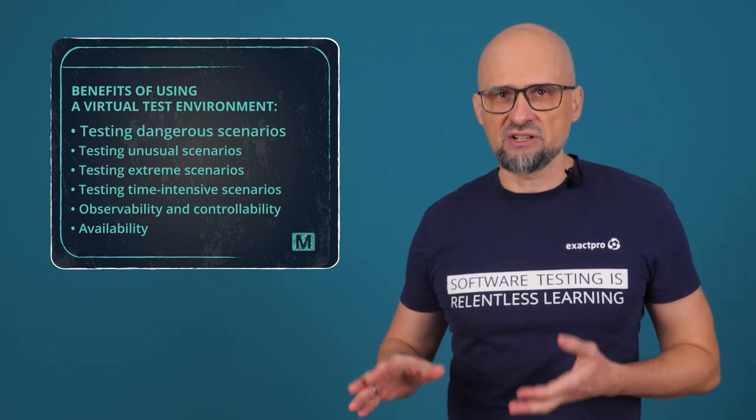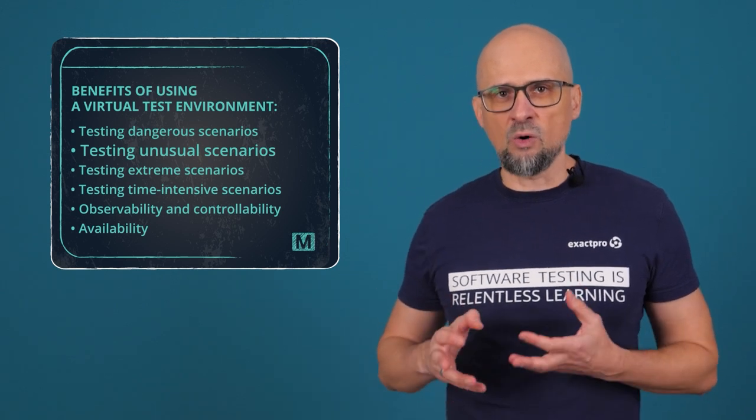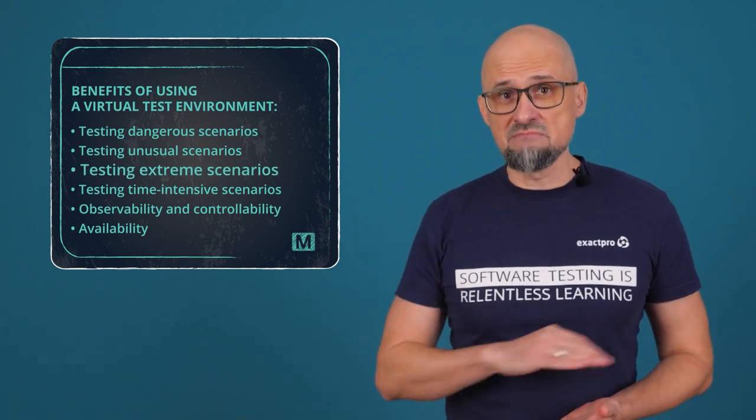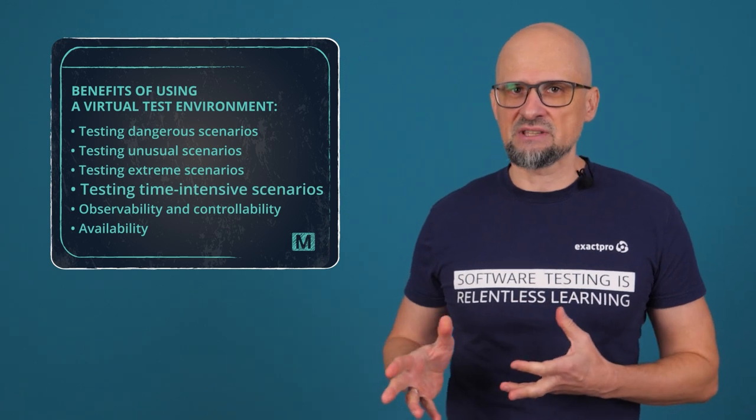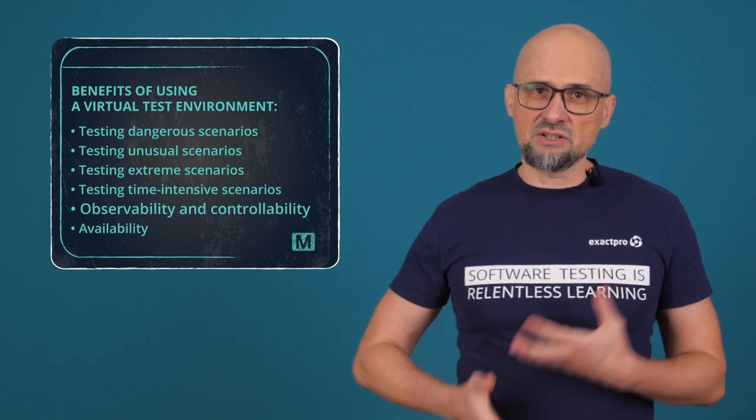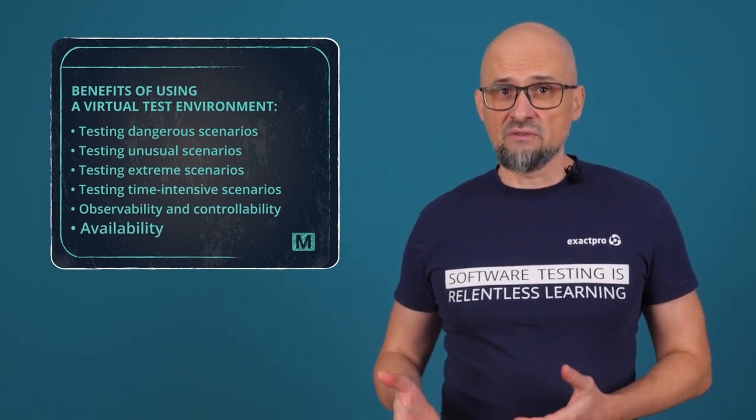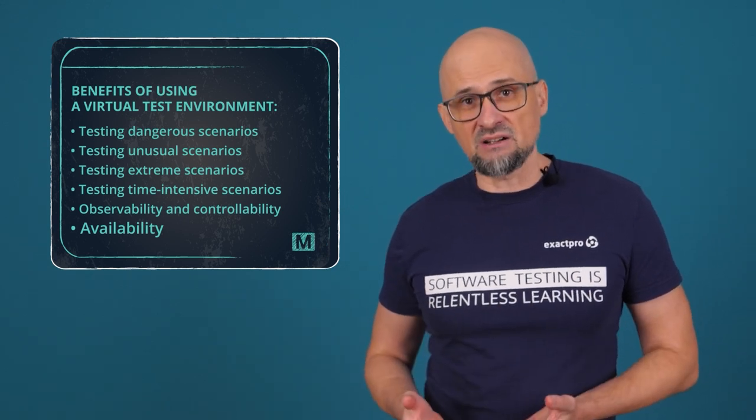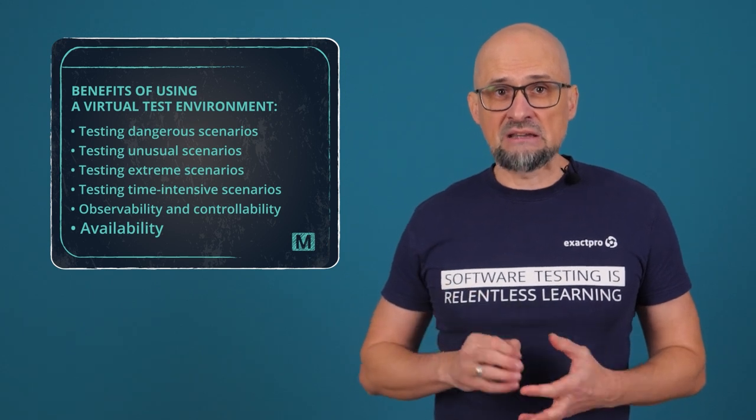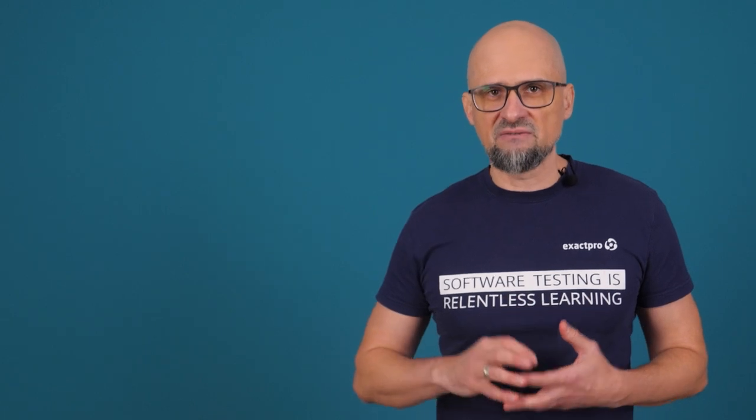What are the benefits of using a virtual test environment when testing an AI-based system? Testing dangerous scenarios without any danger to the system under test, humans, or the operational environment. Testing unusual scenarios when real operations are time-consuming or expensive to set up. Testing extreme scenarios that otherwise would be impossible to test in real life. Testing time-intensive scenarios in reduced timescales in a virtual environment, which leads to saving time usually spent on environment setup and testing. Observability and controllability are far greater in virtual test environments. And lastly, the issue of availability. The simulation of hardware by virtual test environments allows systems to be tested with simulated hardware components that otherwise may not be available. Perhaps they have not been developed yet, or are too expensive. Virtual test environments may be built specifically for a given system, may be generic, or may be developed to support specific application domains. Both commercial and open-source virtual test environments are available to support the AI-based system testing.